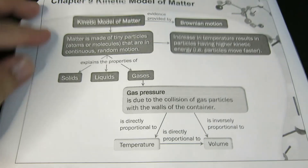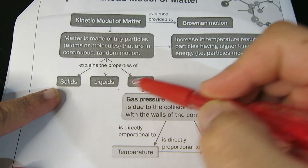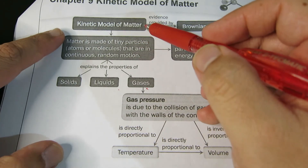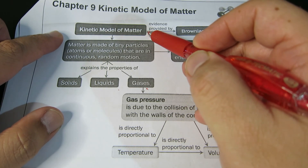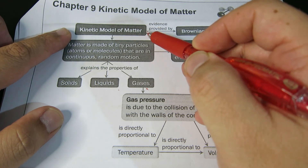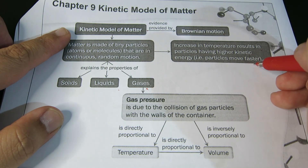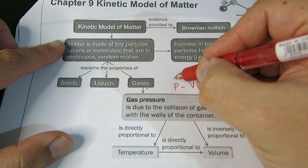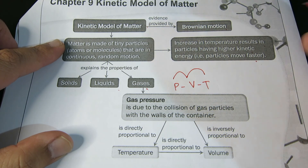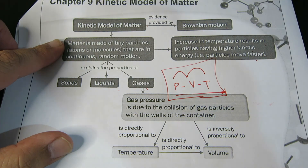To summarize: the kinetic model of matter — you need to know the properties of solid, liquid, and gases, and what the kinetic model of matter says about the particles in each state. The evidence for kinetic model of matter is provided by Brownian motion. An increased temperature results in particles having higher kinetic energy and moving faster. Finally, we examined the PVT relationships. You need to be able to quote all the required information and not miss key words if you want full marks. That's all!